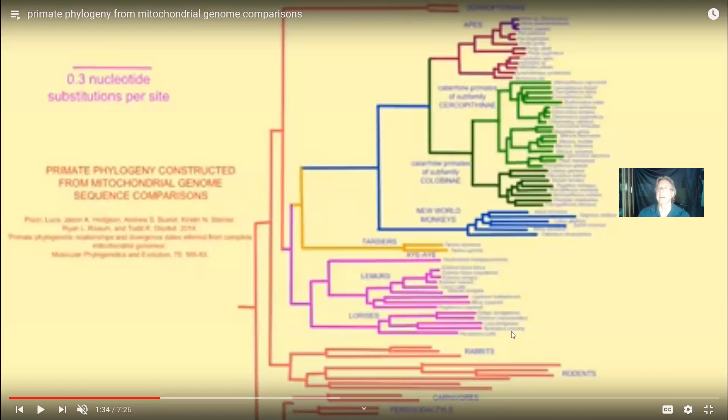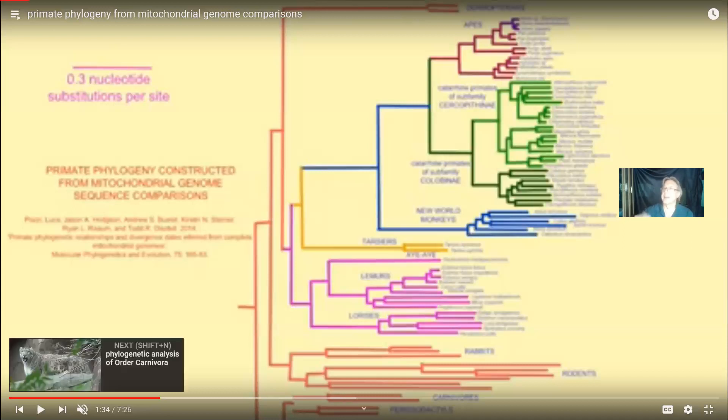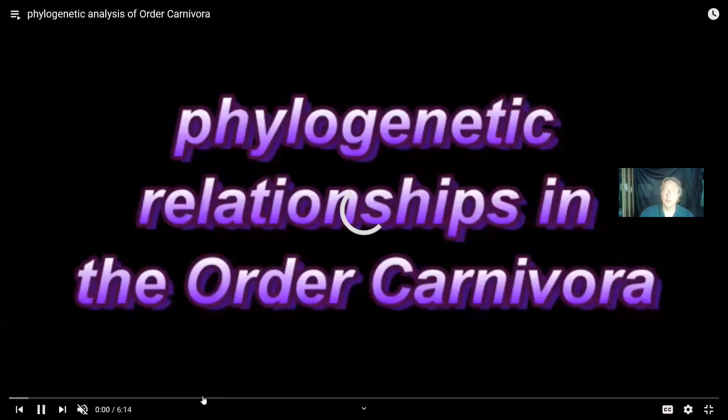Add in the lemurs, and the order Primates forms a group more closely related to each other than to any other group. We live in an era where genetic sequences are published by the thousands. So if you have these models, you can test them — and you should. That's what we do in science: we test our ideas.